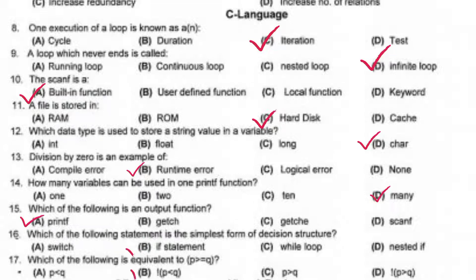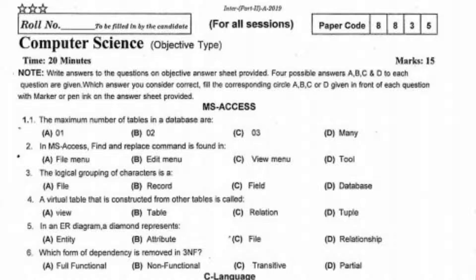Which of the following is equivalent to? Right, option B. The maximum number of tables in a database are many. In MS Access, find and replace command is found in. The logical grouping of characters is a field.